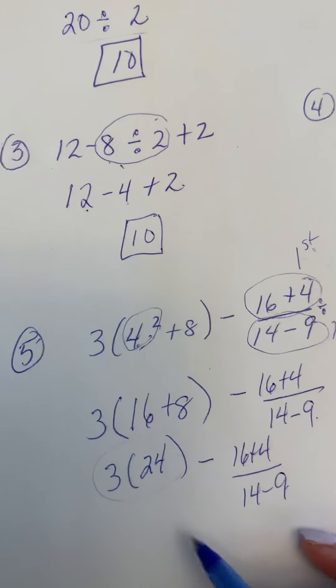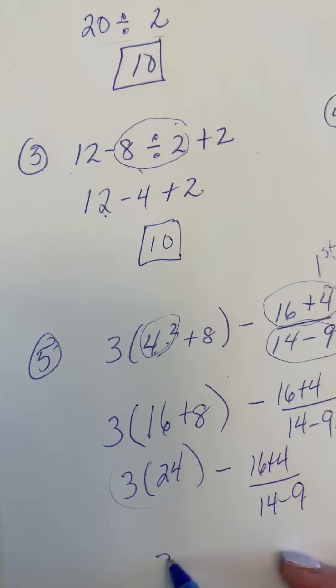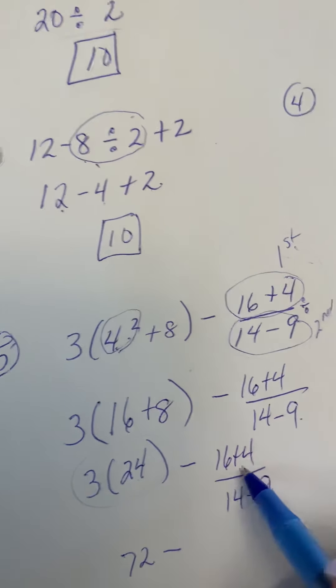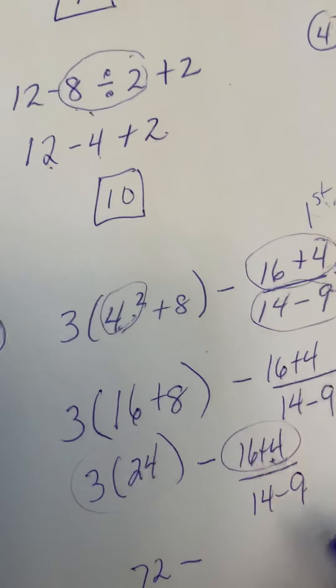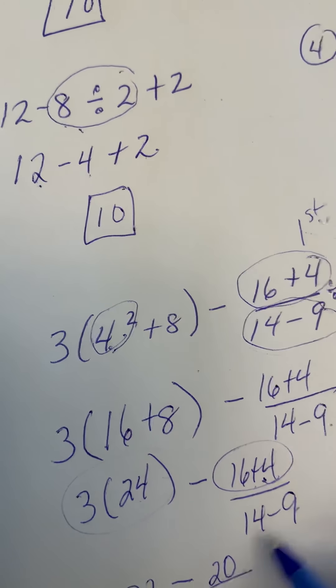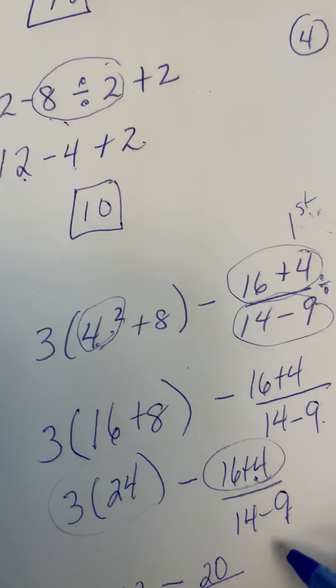We have 3 and then 16 plus 8 is 24, and then minus 16 plus 4 over 14 minus 9. And so then you could do this piece here, and 24 times 3 is 72 minus. And now we're going to move on to this piece right here. Remember back up here I said we do this piece first. So 16 plus 4 is 20, and 14 minus 9 is 5.